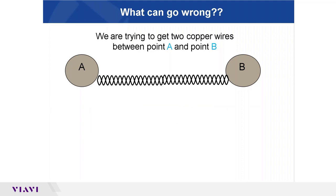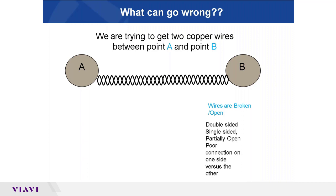What are we really trying to accomplish? Whether it's a 50,000-foot loop going out in the country or a 3,000-foot bonded VDSL loop, the goal is the same: get two copper wires between point A and point B. What might happen along the way? Well, the wires could be broken. The telco slang term for that is 'open,' but that word is subjective — it covers both wires broken, only one wire broken, a partially broken wire, or a poor connector on one side.